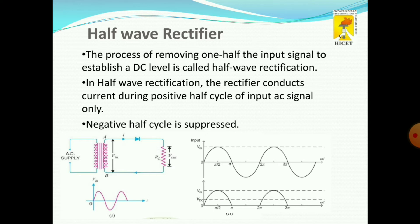We give the AC supply to the transformer. The transformer transfers energy from one place to another — this is the principle of the transformer. When we give the positive supply, the current will pass through the diode, RL, and point B. That means A is positive with respect to B. During this positive half cycle, the current path will be diode D, RL, and B, so the output is generated during the positive half cycle, 0 to pi.